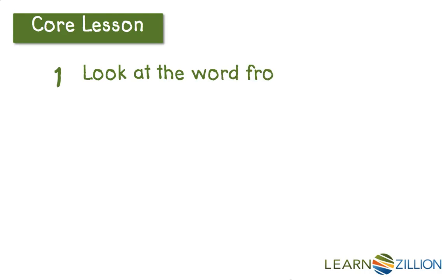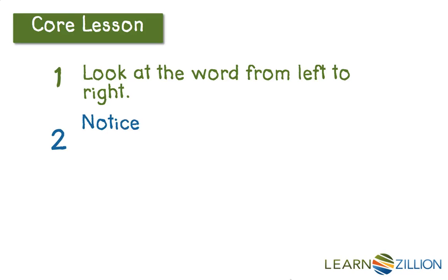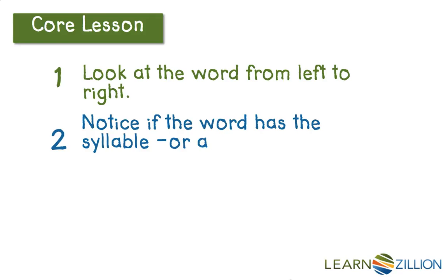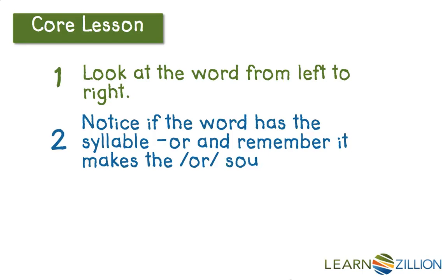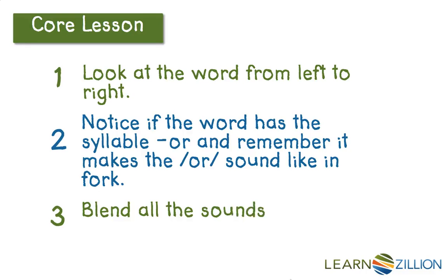Here are the steps I just did to read 'born.' First, I looked at the word from left to right. When I did that, I noticed that it had an OR in it, and I remembered that OR makes the OR sound like in fork. Then I blended the first sound, B, with OR, and the last sound, N, to read the word 'born.' I blended all the sounds in the word together.